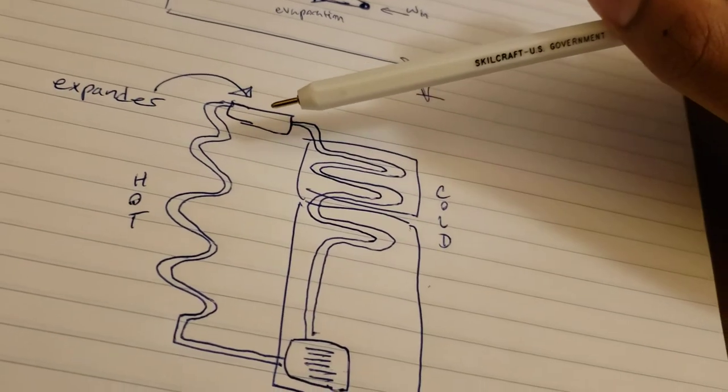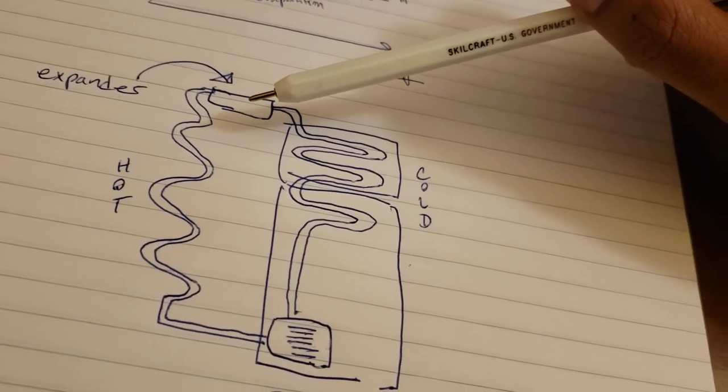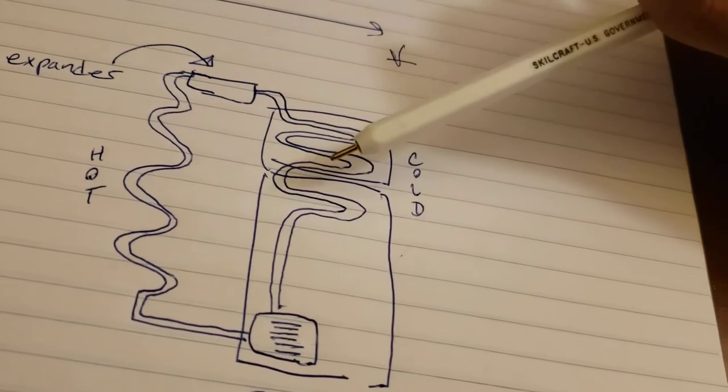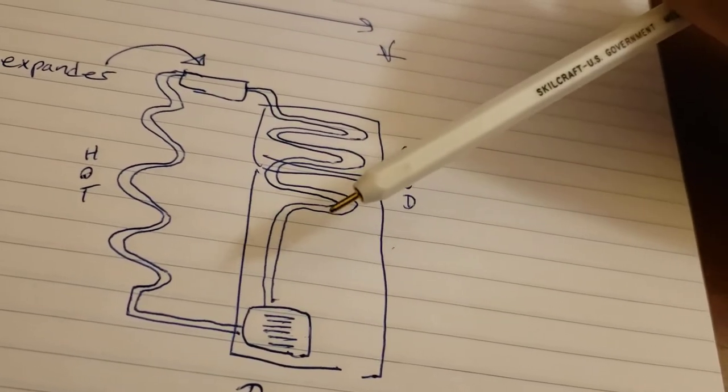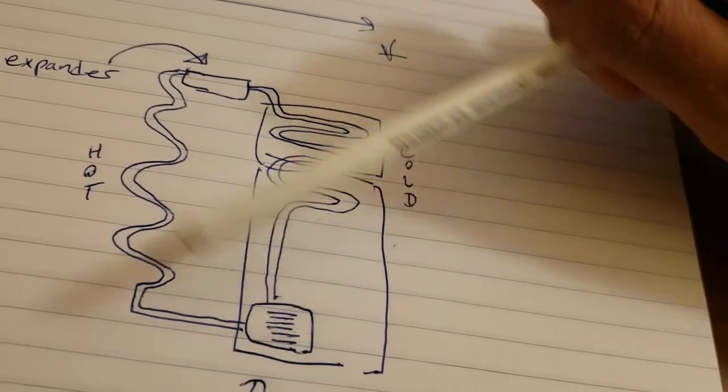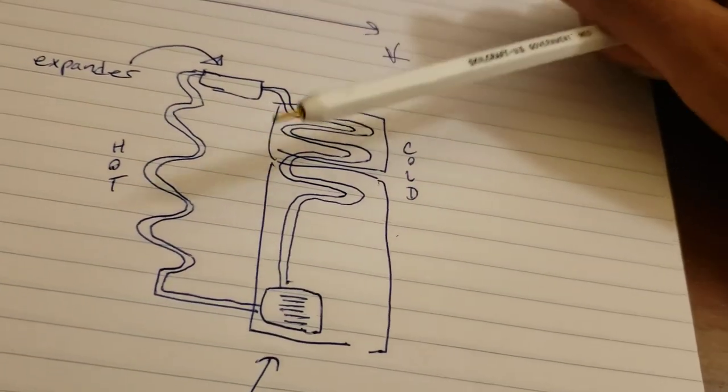And then it's going to go through an expander and expanding it really rapidly is going to make it really cold again. So making it cold passes through all around the food and stuff makes it all cold, and then we're going to pass it through here gets hot again and the cycle continues.